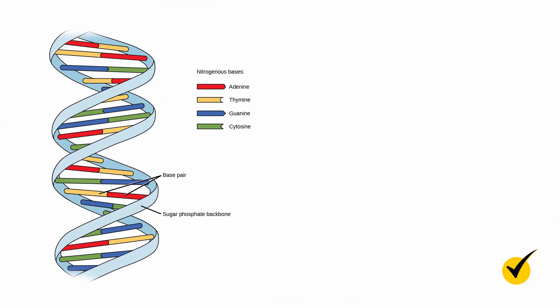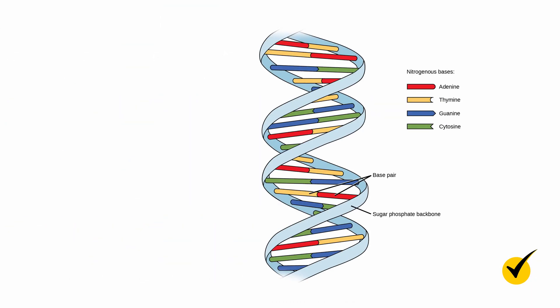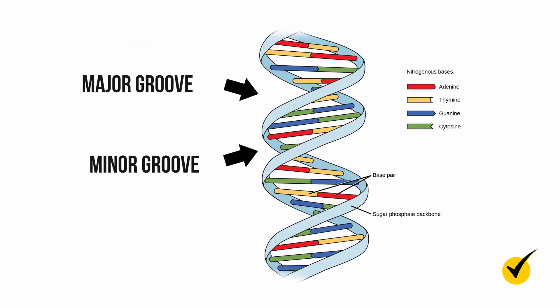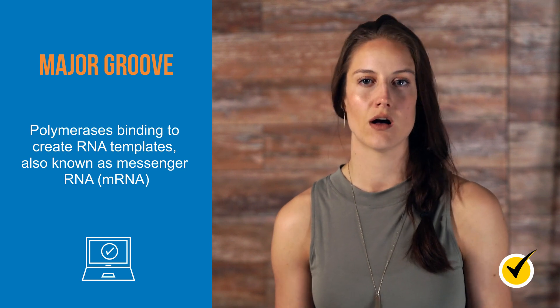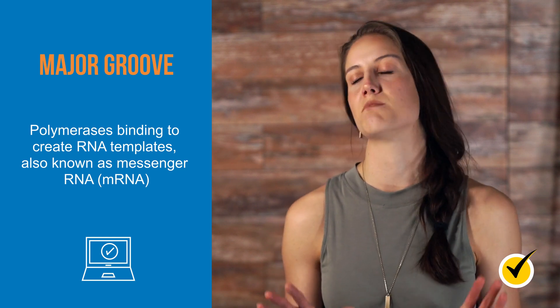Perhaps the most noticeable feature is that it's not a symmetrical helix. The nucleic acid's double helix features a major groove and a minor groove, referring to the larger and smaller gaps between the edges of the sugar-phosphate backbone. The major groove is where most activity takes place, like polymerases binding to create RNA templates, also known as messenger RNA or mRNA.